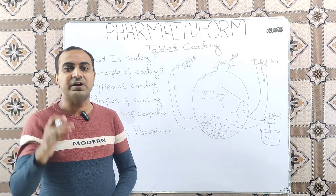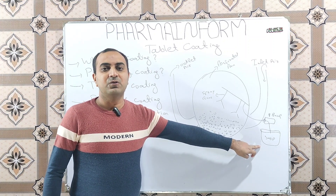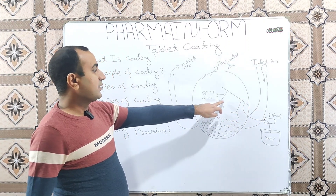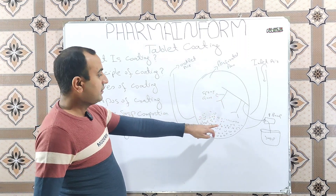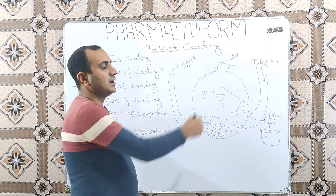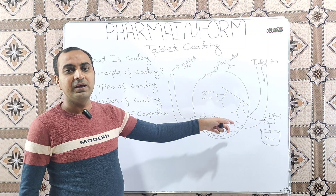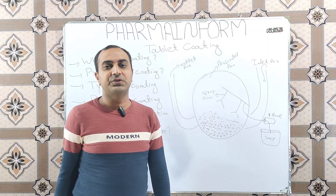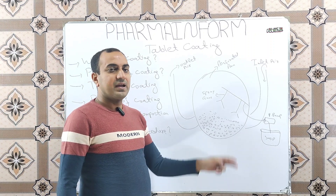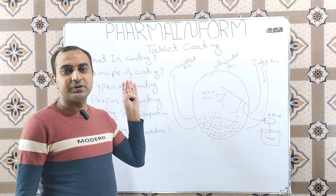This is a cyclic process that continues until the desired weight gain is achieved. The suspension is transferred by a peristaltic pump, atomized by compressed air, and sprayed over the tablet surface using spray guns. The tablets are in continuous motion. Heat evaporates the solvent, solid content deposits over each tablet surface, and exhaust air exits from the outlet. This is the basic principle of tablet coating.